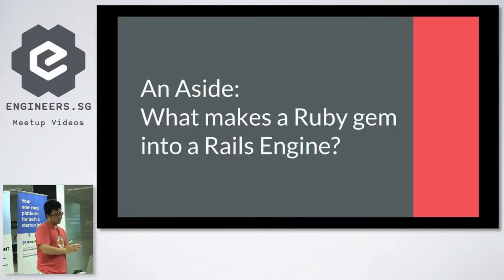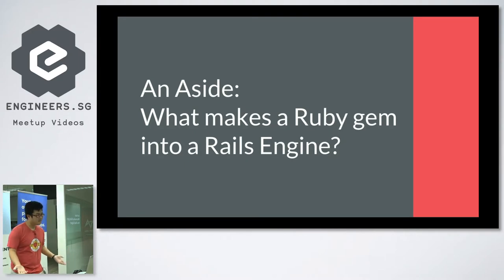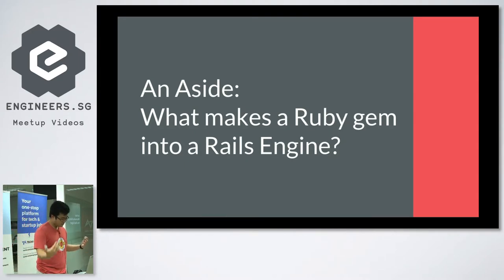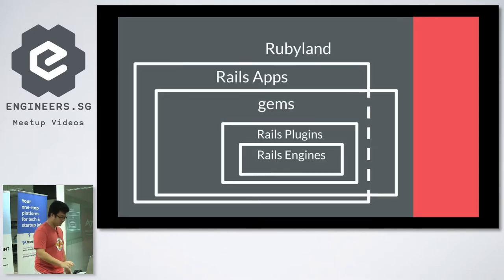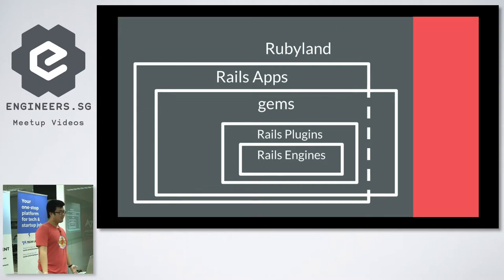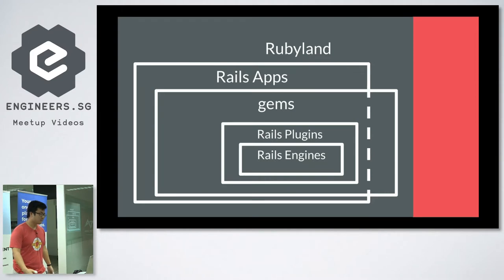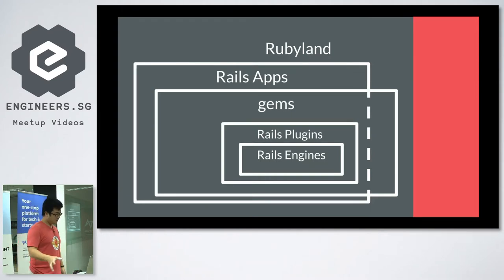So an aside: what makes a Ruby gem a Rails engine? Because clearly not all Ruby gems are Rails engines — some of them just don't work in Rails. So I tried to visualize this. In Ruby land, we have mainly Rails apps, and most of our code is gems. Some of these gems are things we call Rails plugins, and some of the Rails plugins are called Rails engines.